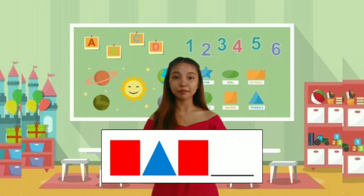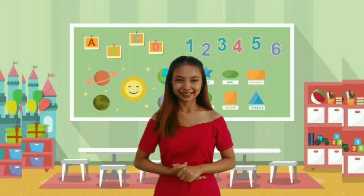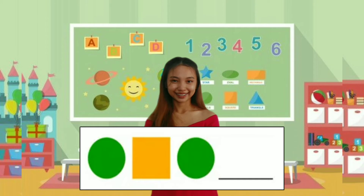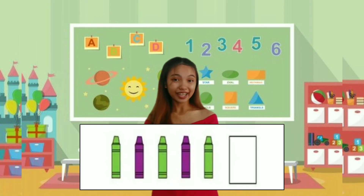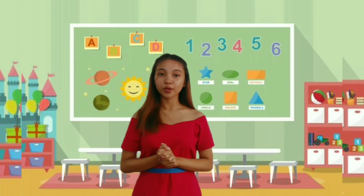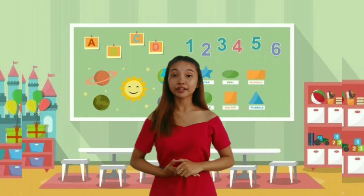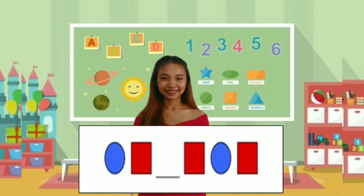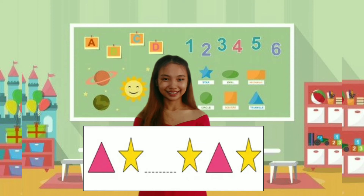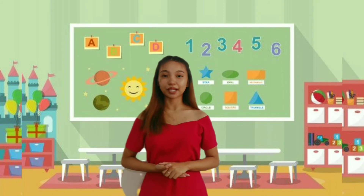Now, I will be showing you an image, then I will tell what comes next and you will repeat after me. Is that clear, class? Okay. Square. Red. Violet. Excellent! Now, I will be showing you again a pattern, but this time I will identify what is missing and you repeat after me. Understand? Circle. Triangle. Very good! Because you followed me correctly, give yourselves a very good clap.